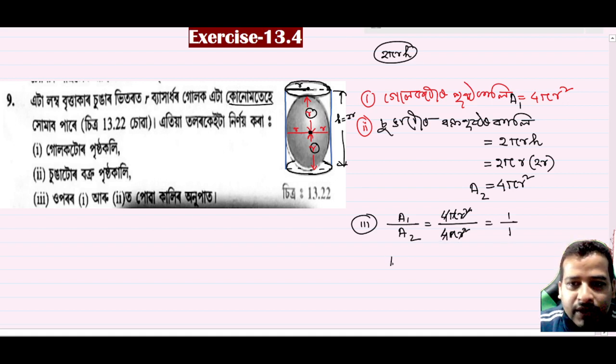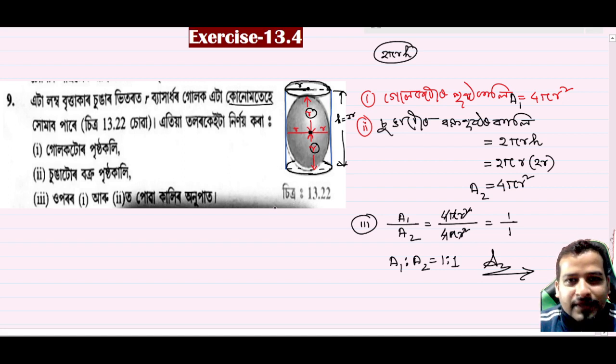And A1 is to A2 is equal to 1 is to 1. So that is our answer. I have already solved this question completely from Exercise 13.4. If you want to like and share, you can share this video on your YouTube link. Thank you so much.